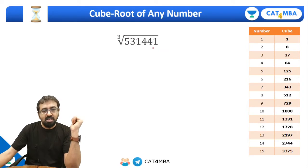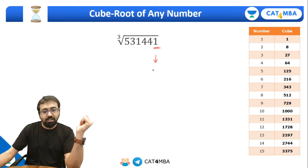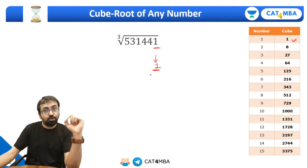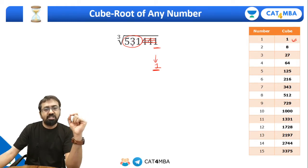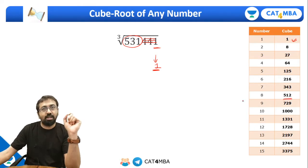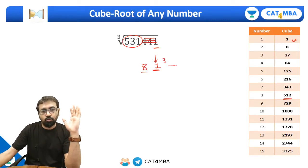Suppose I have a slightly bigger number. The last digit is one. Which number's cube will have last digit as one? The number should have last digit as one, because one cubed is one. So the cube root will have last digit as one. Once again, strike off the last three digits of the number and look at the remaining number. Tell me which number's cube will be just smaller than 531. Eight cubed is 512, which is just smaller than 531. So there should be eight here, meaning 531441 is the cube of 81.